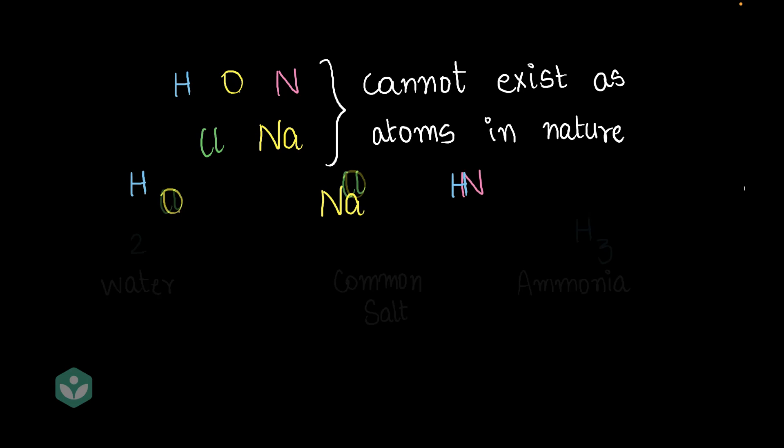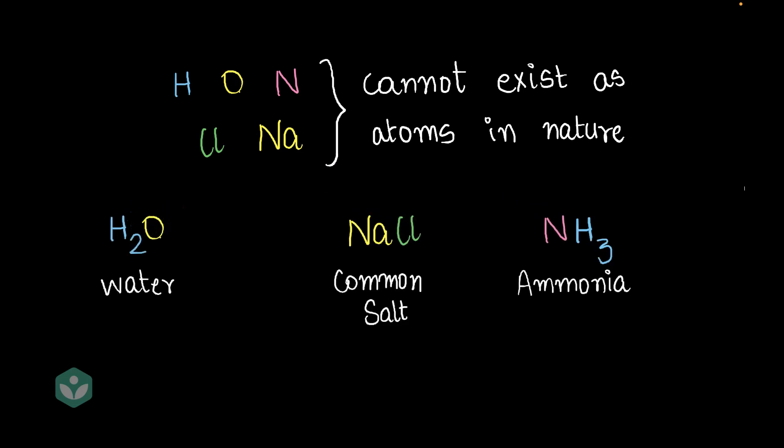Have you ever wondered why elements like hydrogen, oxygen, nitrogen, chlorine, sodium, and most of the elements out there just cannot exist as independent atoms in nature? They exist as molecules of compounds, but they don't exist as independent atoms.